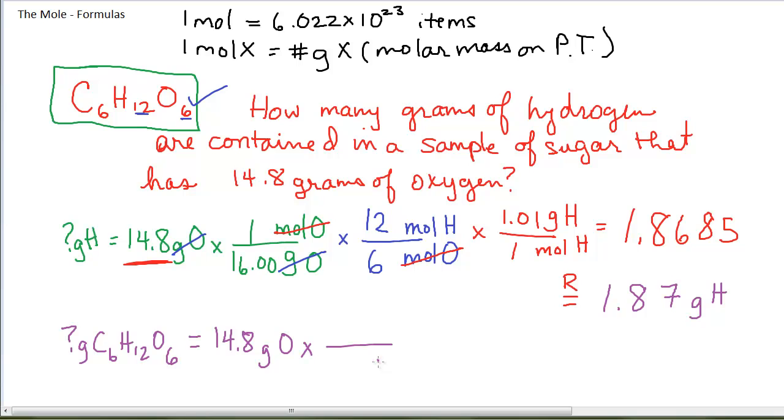I need to convert from grams of oxygen, that'll be on bottom. The key to converting amongst different elements in a formula or the formula and the element itself is moles. I will always go through moles. Almost all of our conversions involving formulas are going to involve the moles step. Just get used to it. So 1 over 16, that's the molar mass from the periodic table, and my grams of oxygen cancels.